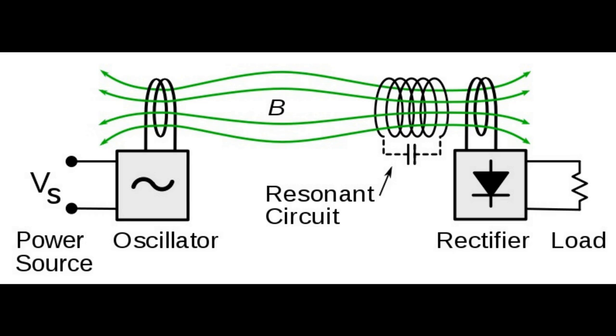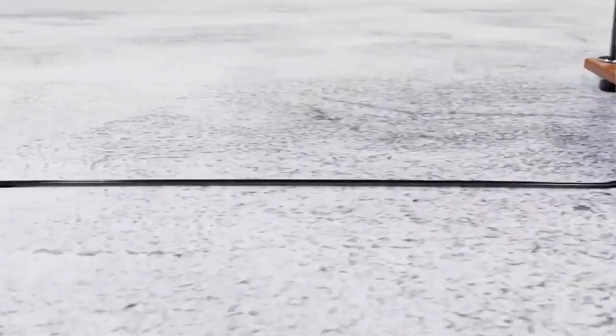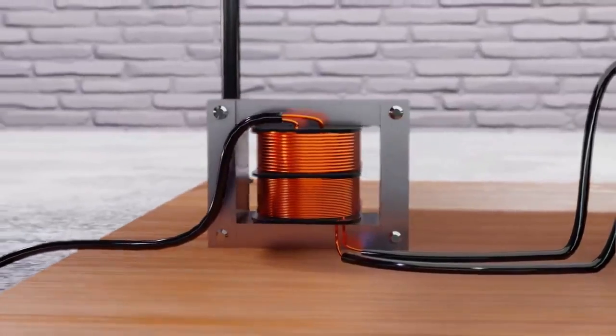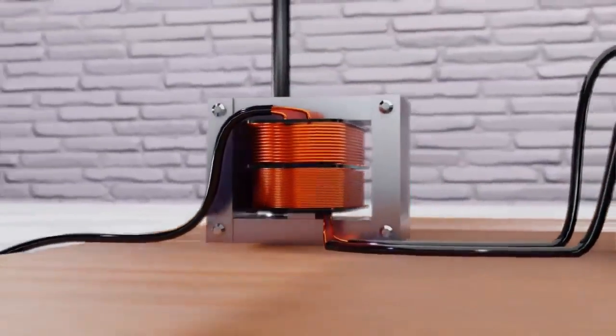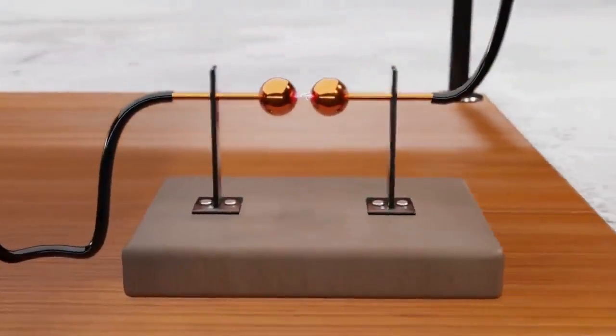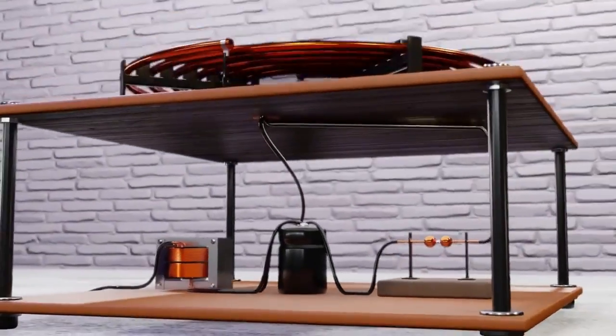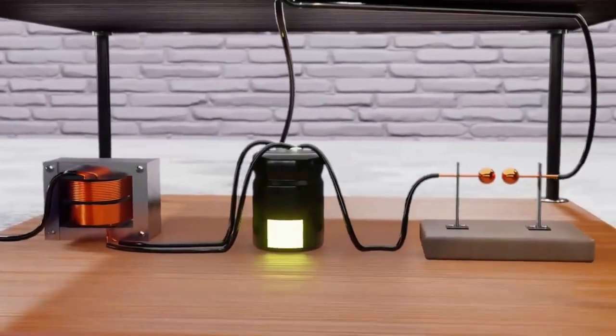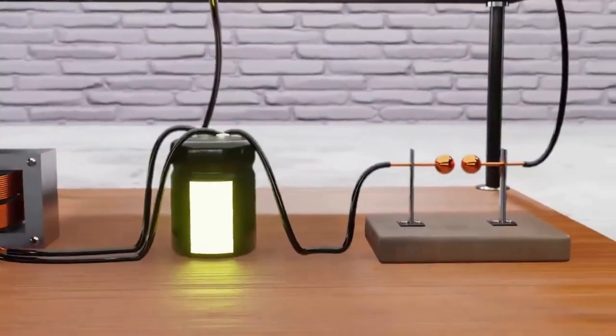The Tesla coil operates by feeding an alternating current into the primary coil, creating a magnetic field that induces a high voltage in the secondary coil through electromagnetic induction. The secondary coil, with many more windings than the primary, steps up this induced voltage to incredibly high levels reaching millions of volts.